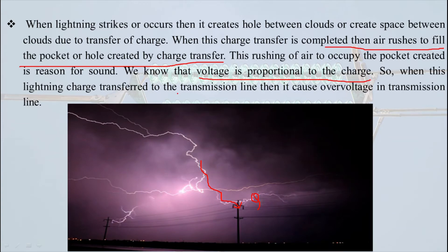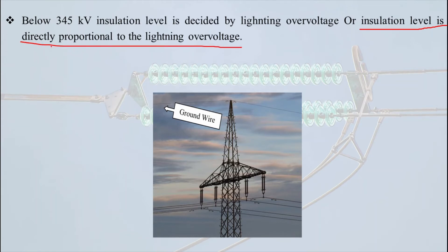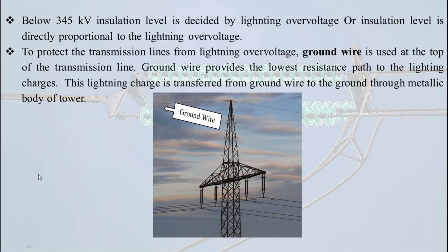Below 345 kV, the insulation level is directly proportional to lightning over voltage — that is, the insulation level is decided by lightning over voltage. To protect our transmission line from over voltage, a conducting wire known as a ground wire is used at the top of the transmission line tower. Being at the top, it provides the lowest resistance path to lightning charges, which are then transferred to the ground through the metallic body of the tower.